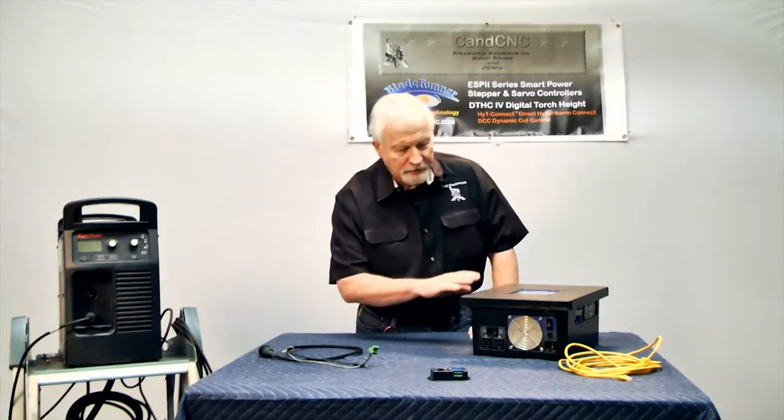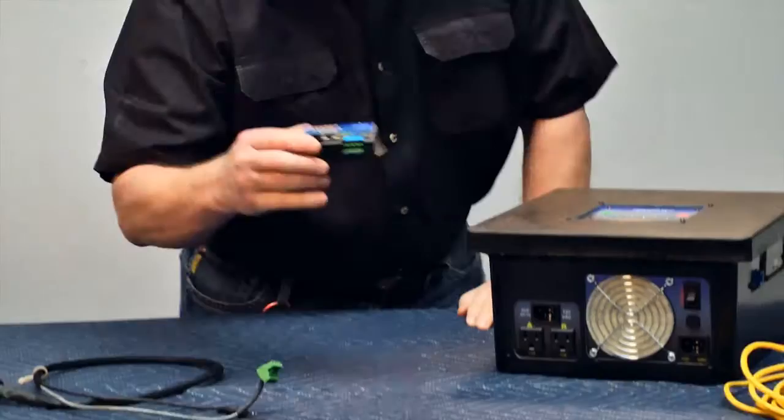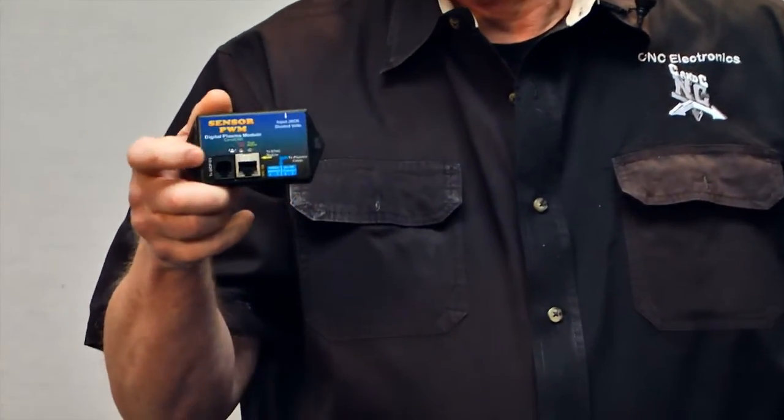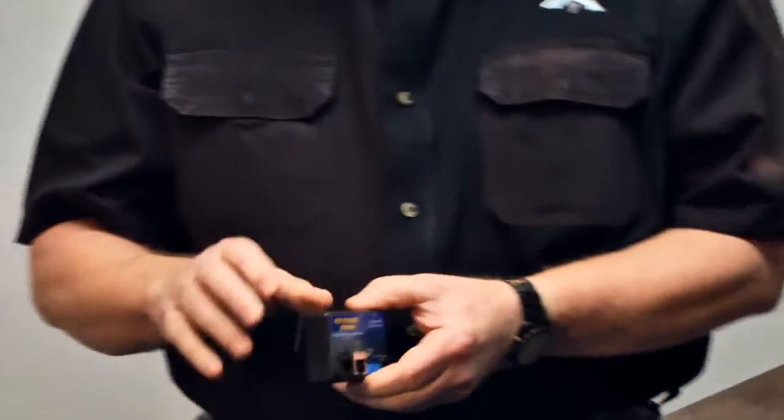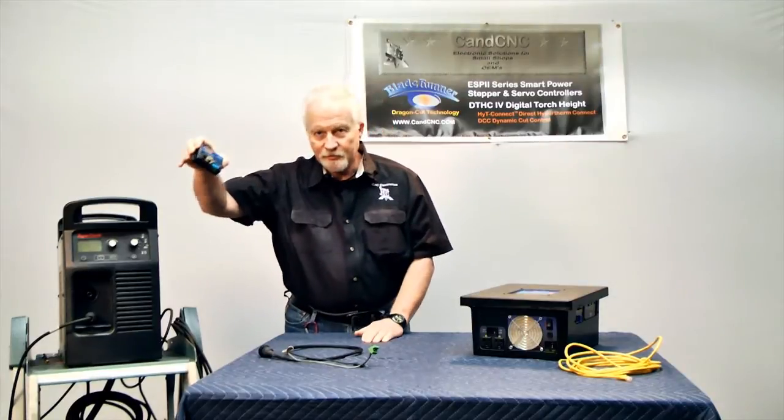On all of our systems, when you buy this system, you get this module right here. This is called a PWM module. It's a module that mounts at the plasma cutter.